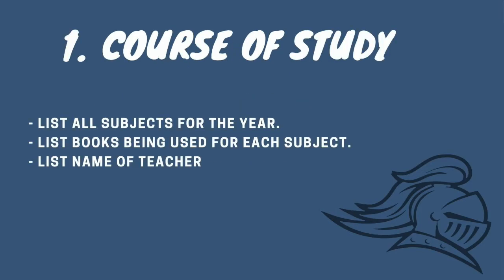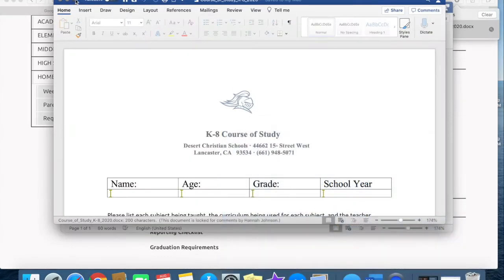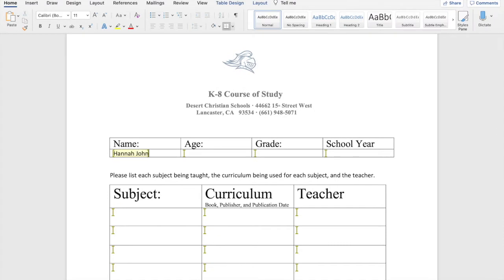The first form for K-8 initial reporting is called the Course of Study. This form can be found at desertchristian.com under Academics, under Home Education, under Parent Tools, and then it can be downloaded. You will fill it out on the computer or with a pen.